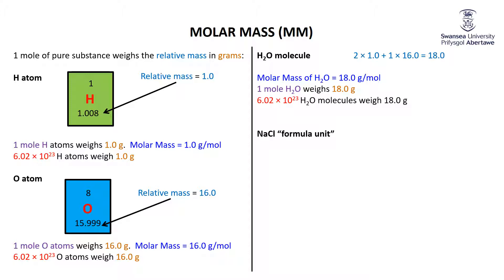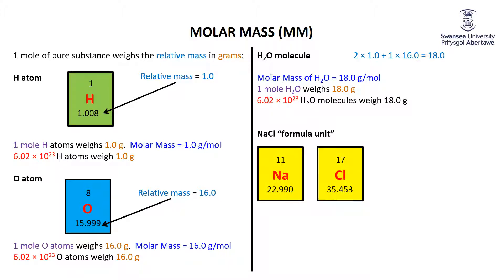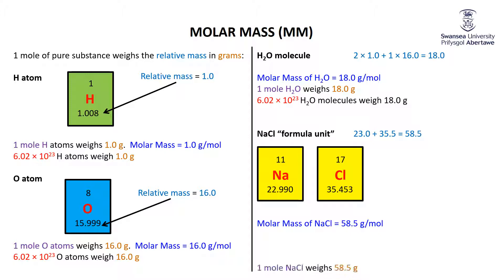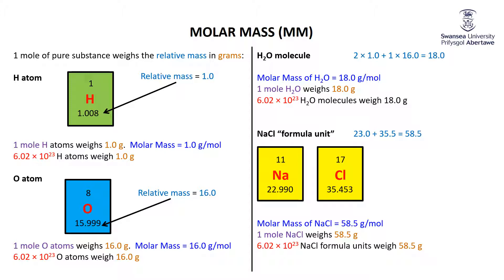One more example: NaCl. As we'll see later, you can't really talk about molecules of NaCl — you talk about formula units — but the formula unit of NaCl has a mass of 23.0 (for Na) plus 35.5 (for Cl), giving a relative mass of 58.5. That means the molar mass of NaCl is 58.5 grams per mole — one mole of NaCl weighs 58.5 grams, or 6.02×10²³ formula units of NaCl weigh 58.5 grams.